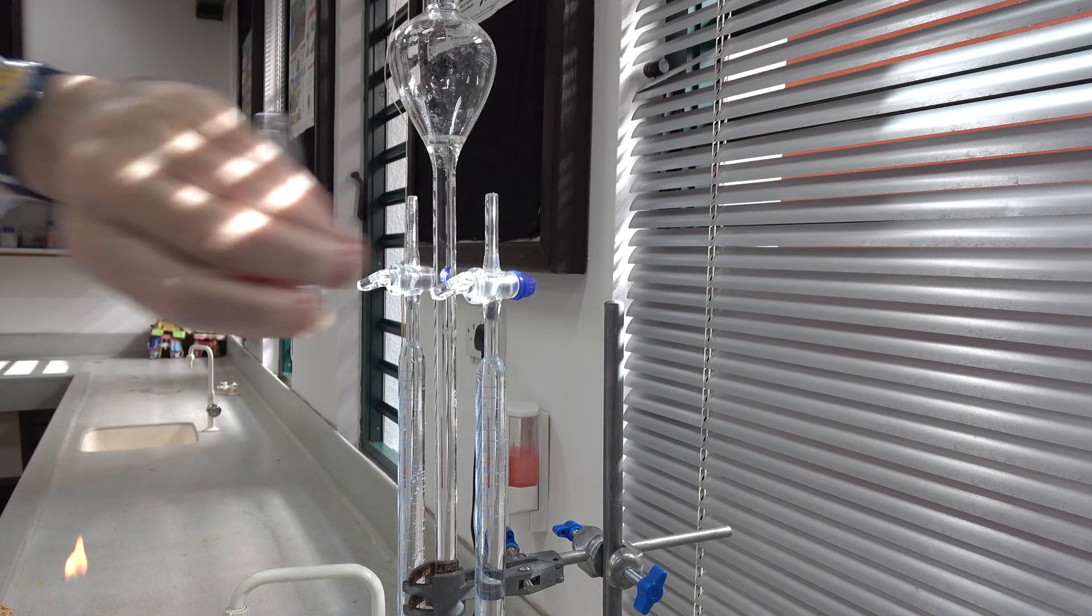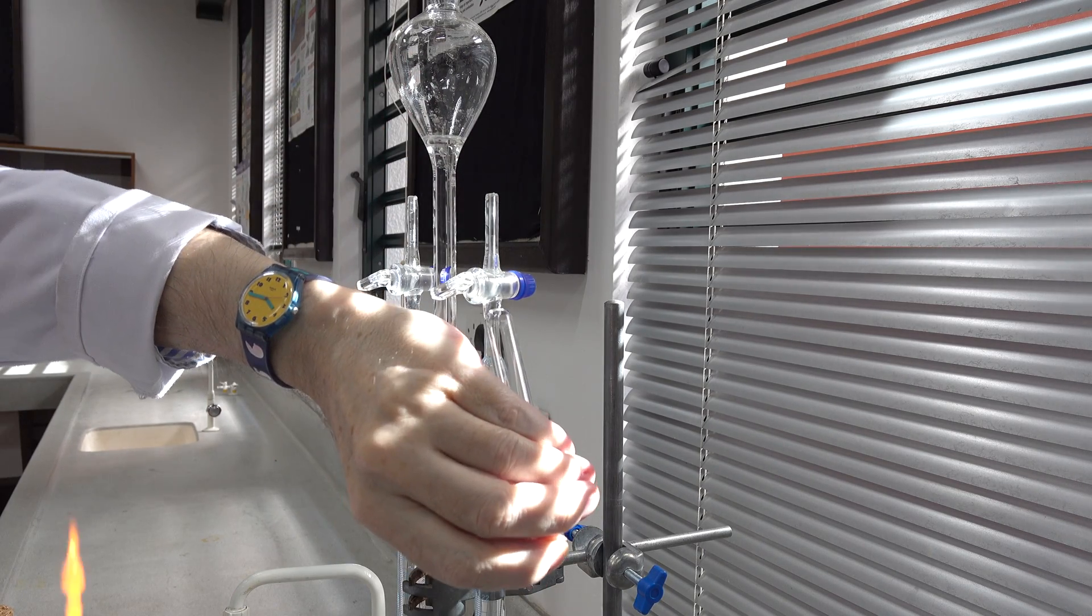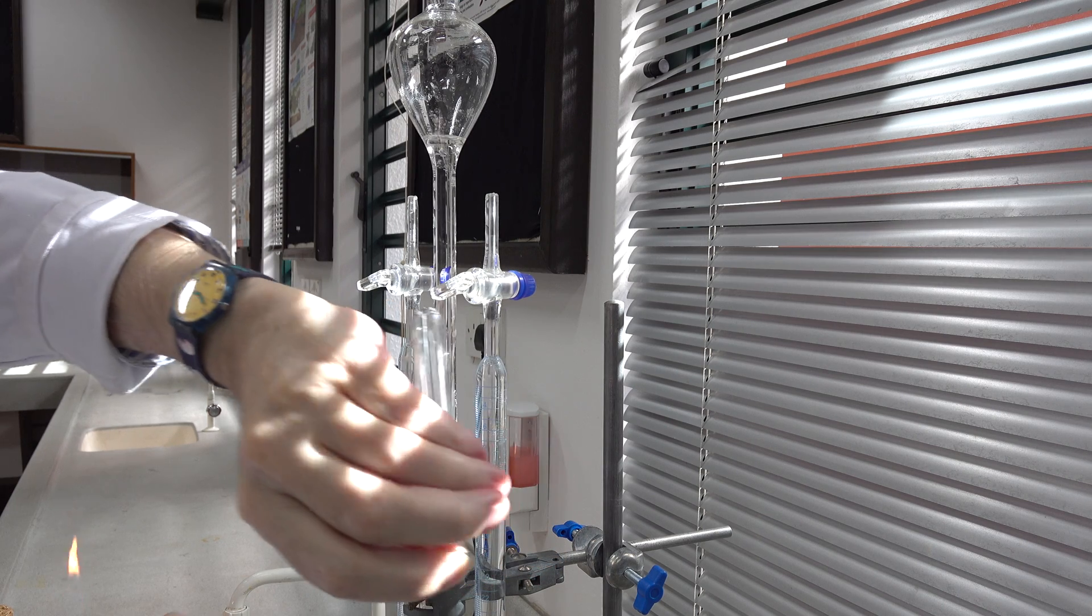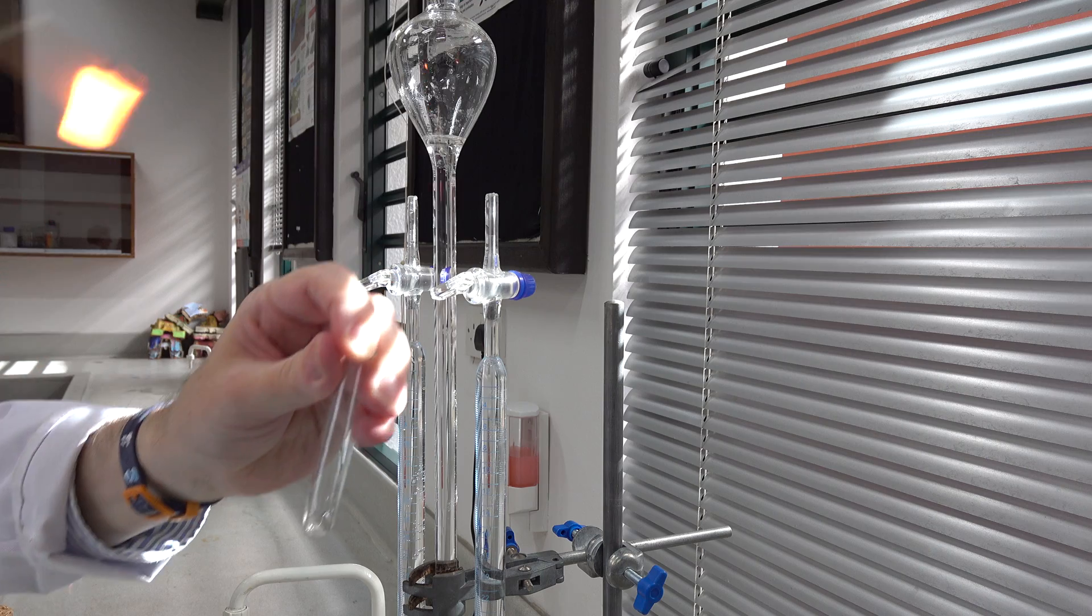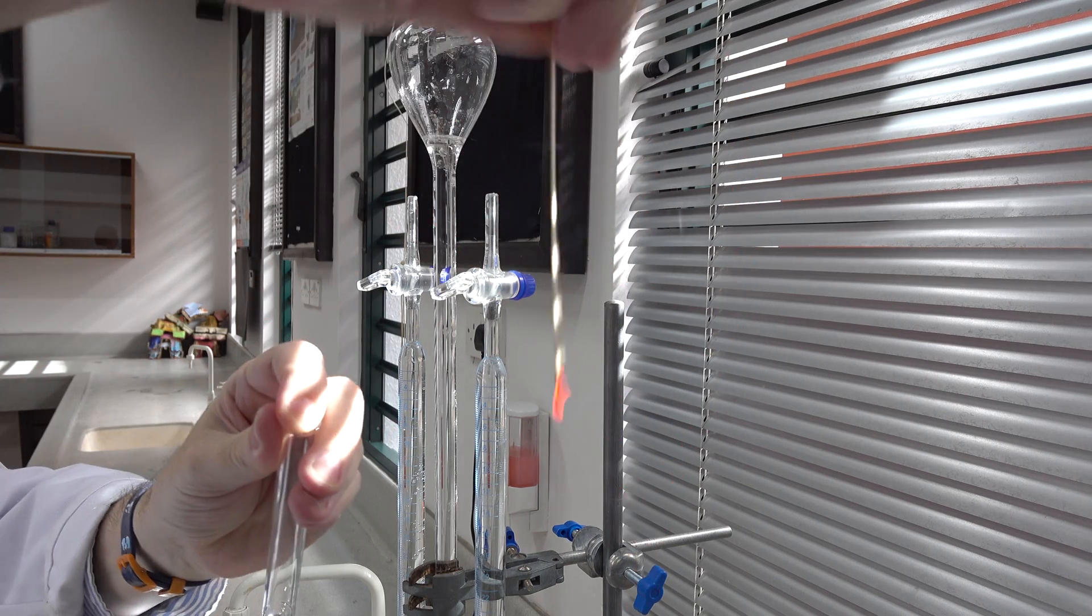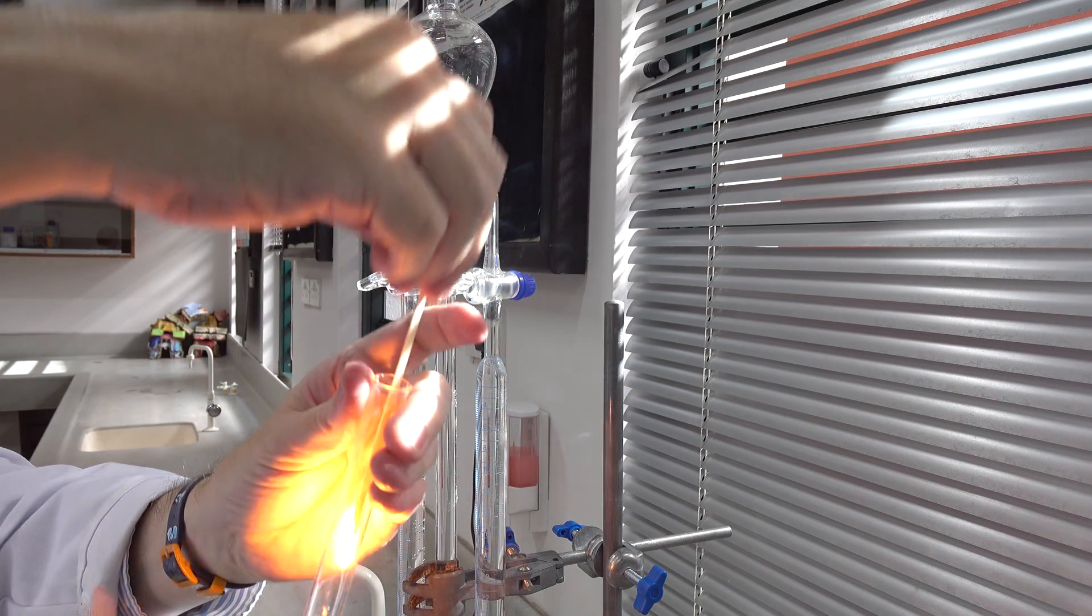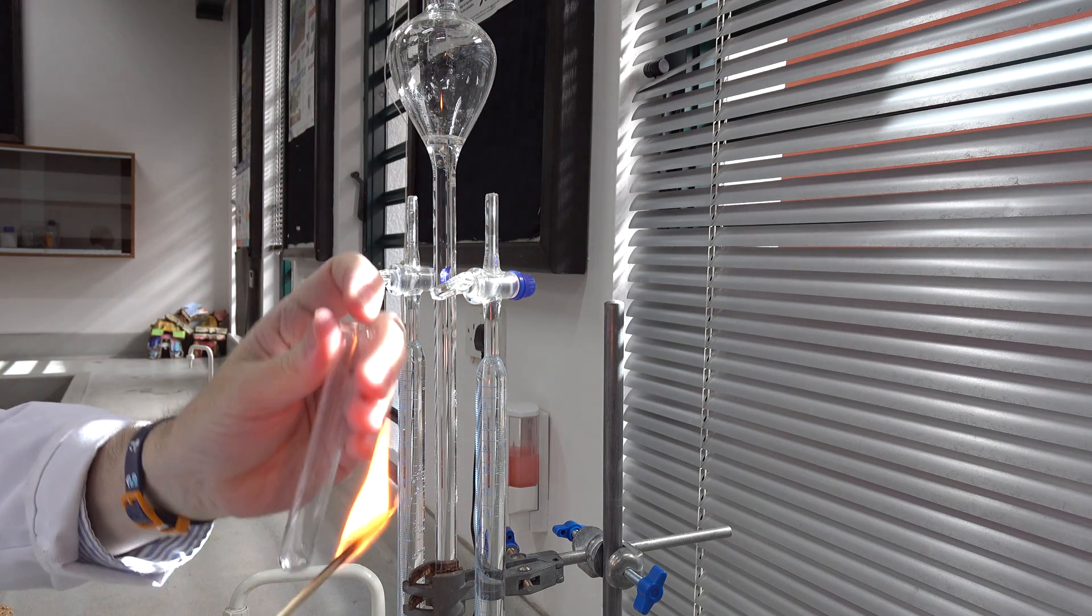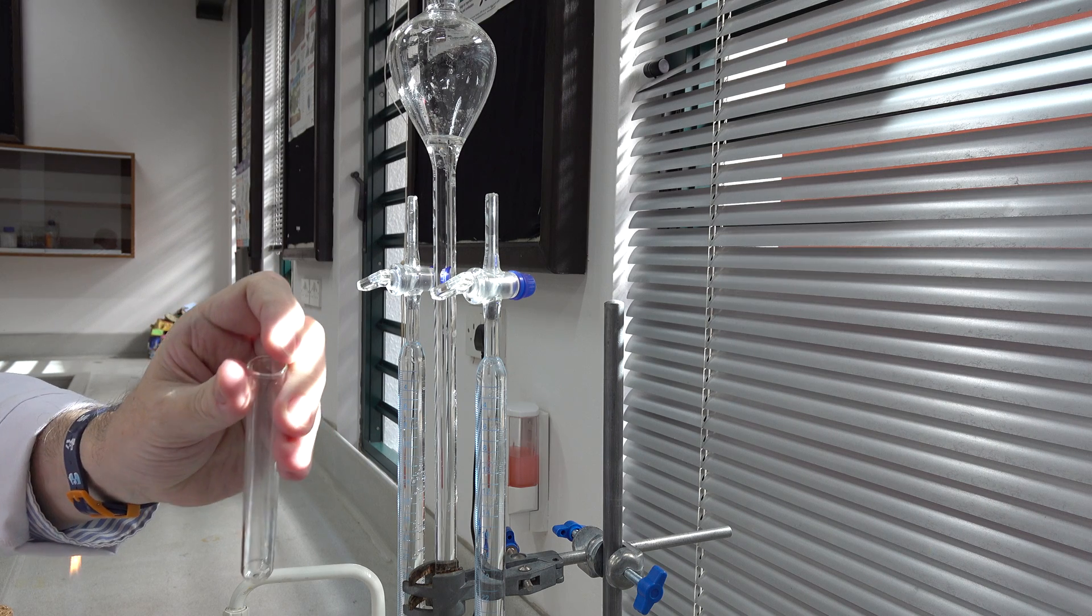This time we'll be testing with a glowing splint. We'll see if we can get it to relight. And there - relight of a glowing splint. That's a positive test for oxygen gas at the anode.